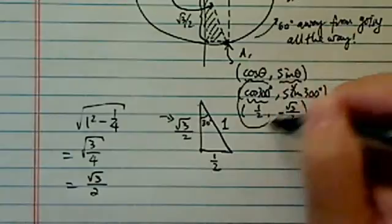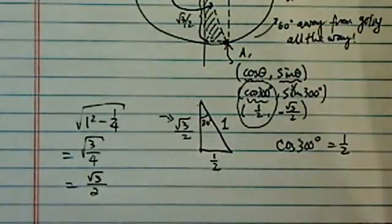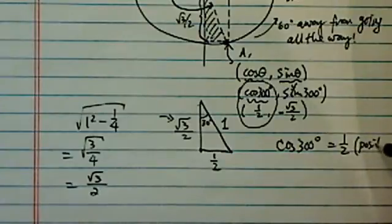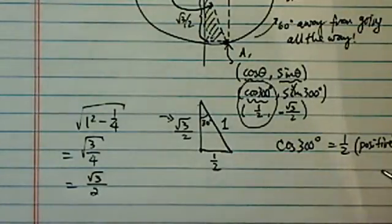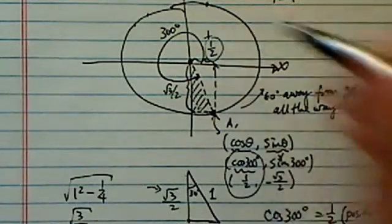Now this corresponds to the cosine value. So from there, we see cosine 300 is equal to half. It's positive because the x is positive. Now remember this is the x-axis, so this one is positive half.